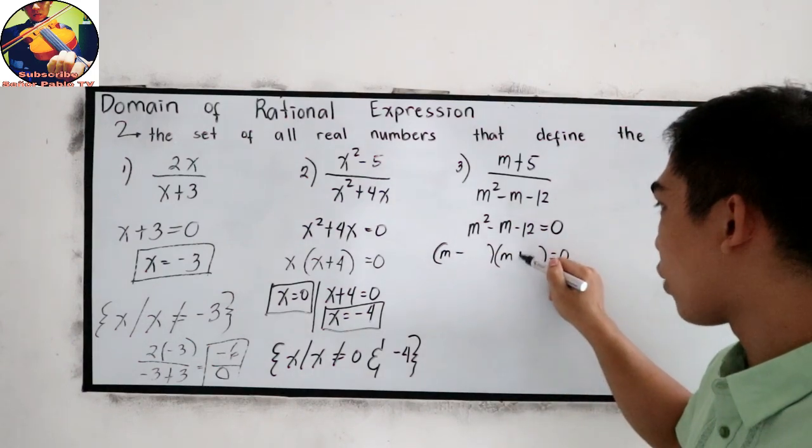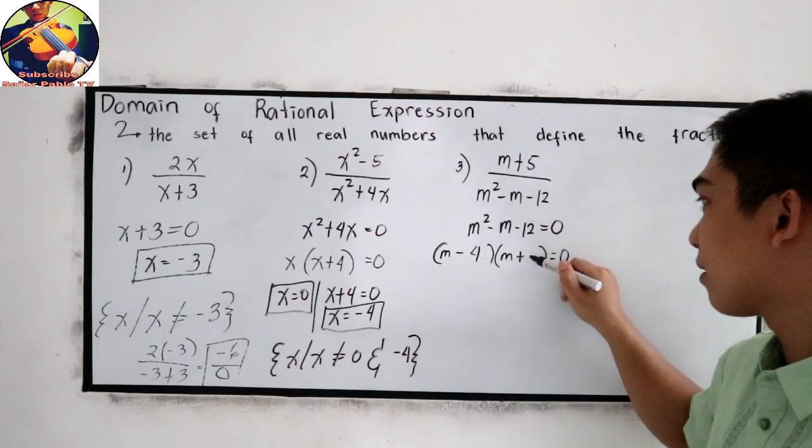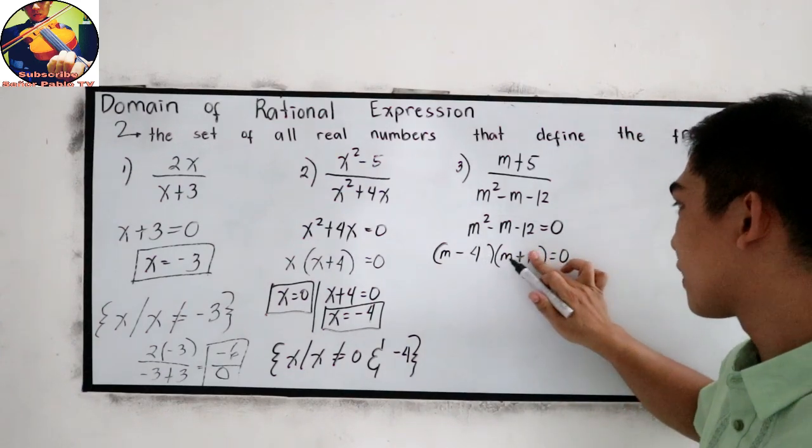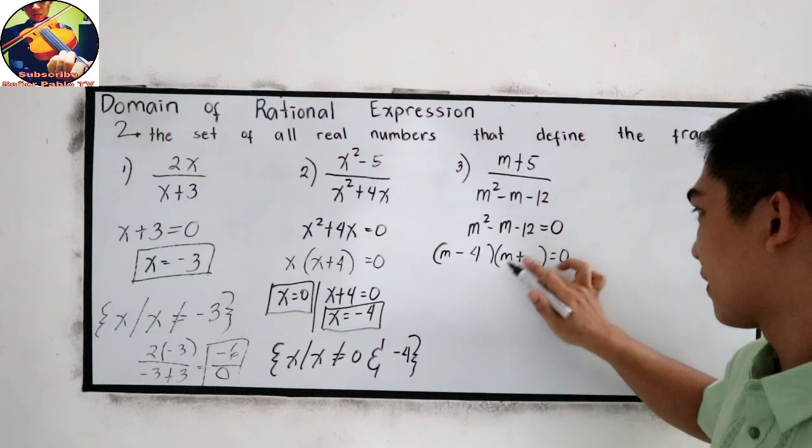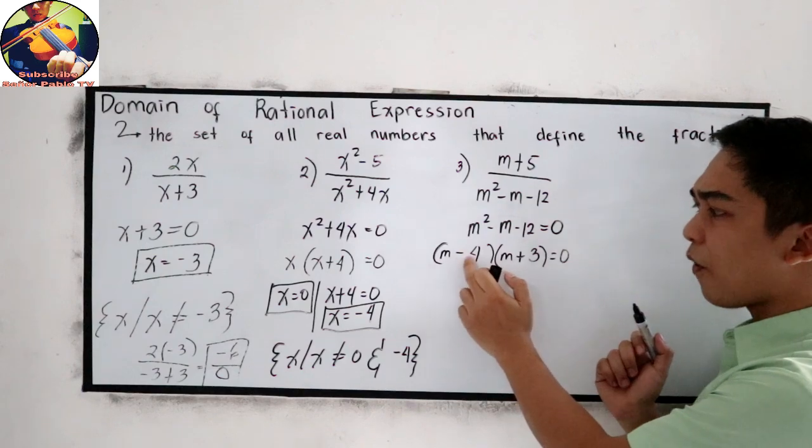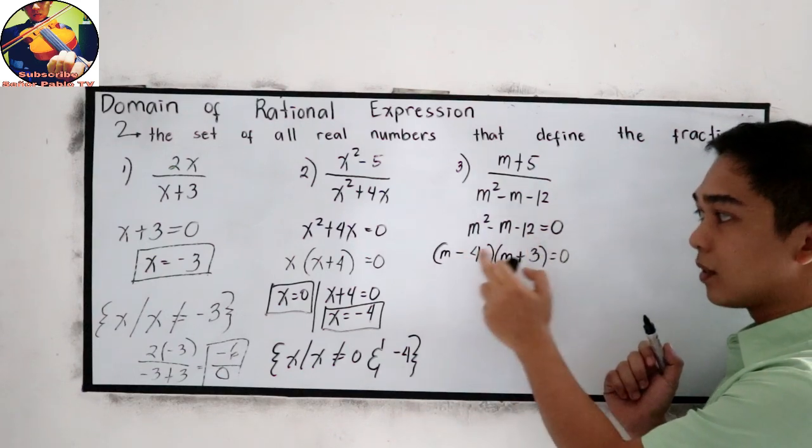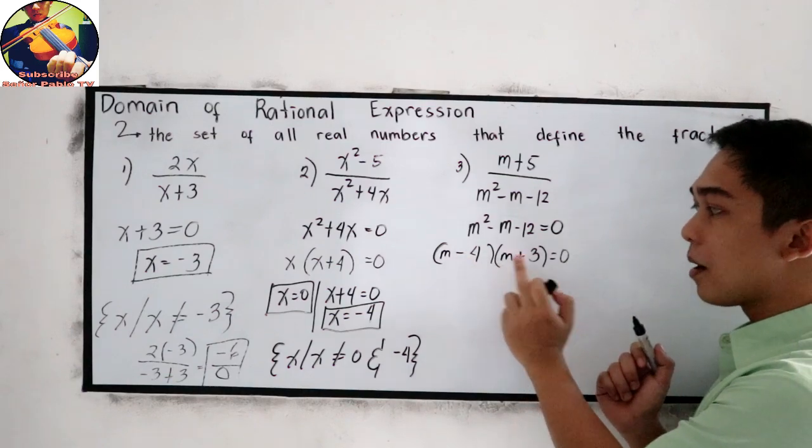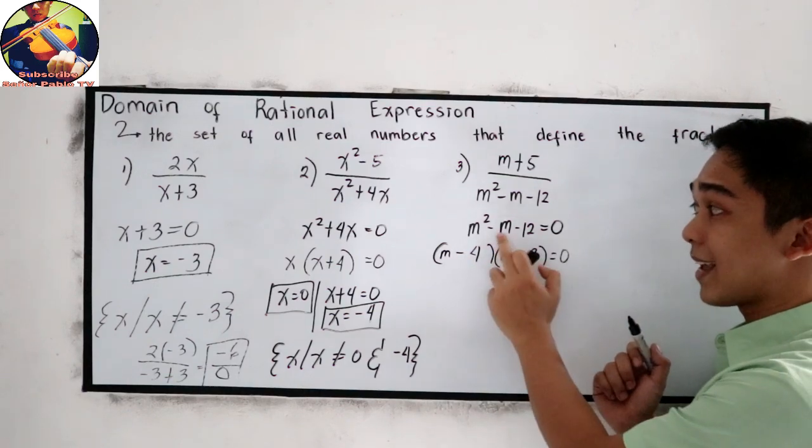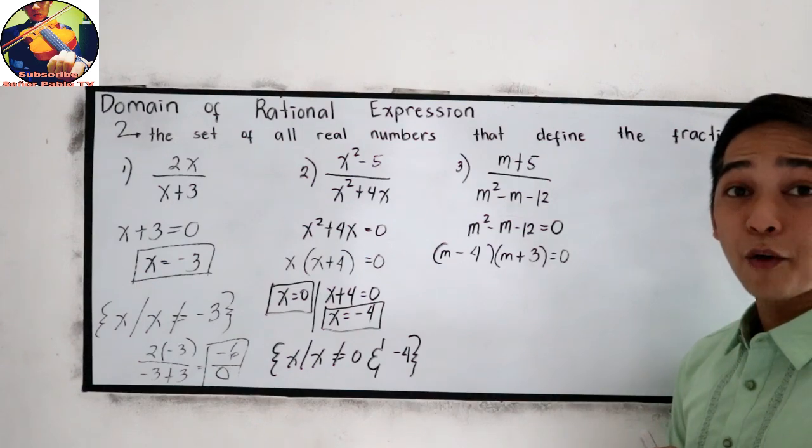So negative 4 and positive 3. Let us check. Negative 4 times positive 3 is negative 12. Negative 4 plus 3 is negative 1. Now, equate to 0.